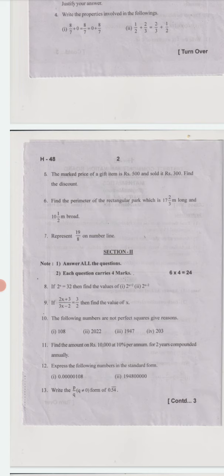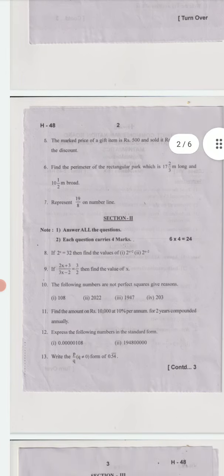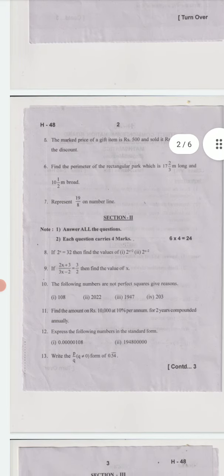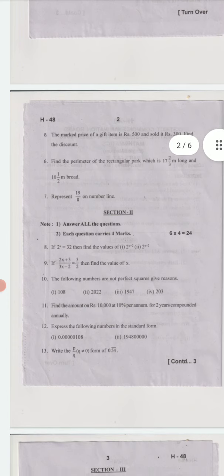How to represent rational numbers on the number line is the concept-based question. Section 2: Question 8 - if 2^x = 32, then find the value of 2^(x+2) and 2^(x-2).